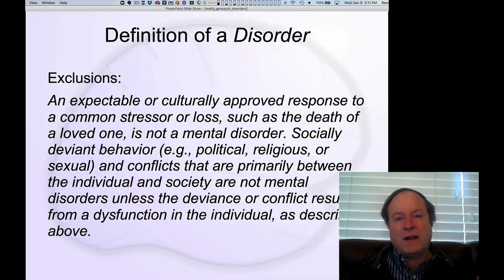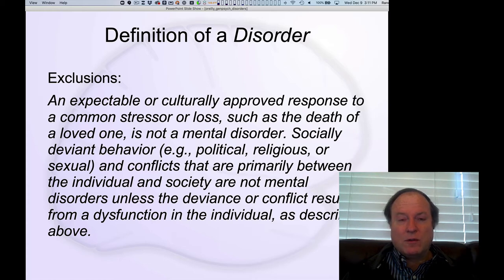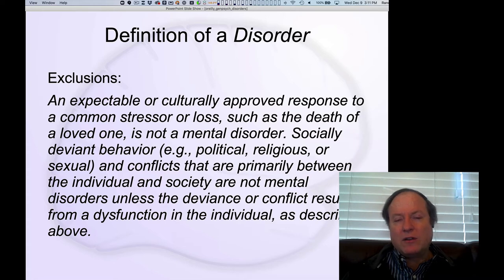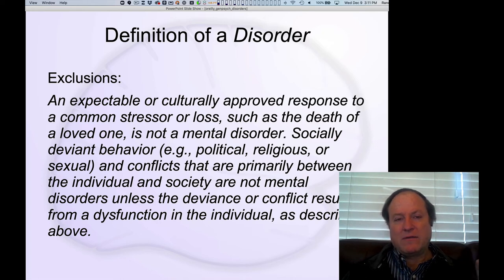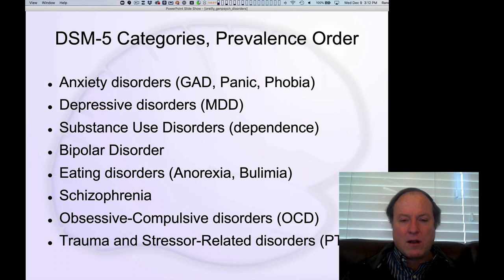It's also important to qualify the disorder by excluding accepted normal kinds of behavior. For example, if you suffer the loss of a loved one, it's normal to be disaffected, so that doesn't count as a disorder. Socially deviant behavior or conflicts that are primarily social in nature are also excluded — being radical or having different cultural beliefs doesn't qualify. The definition has to be about basic functioning of the individual. Here are the most important categories in order of prevalence specified by the DSM-5.